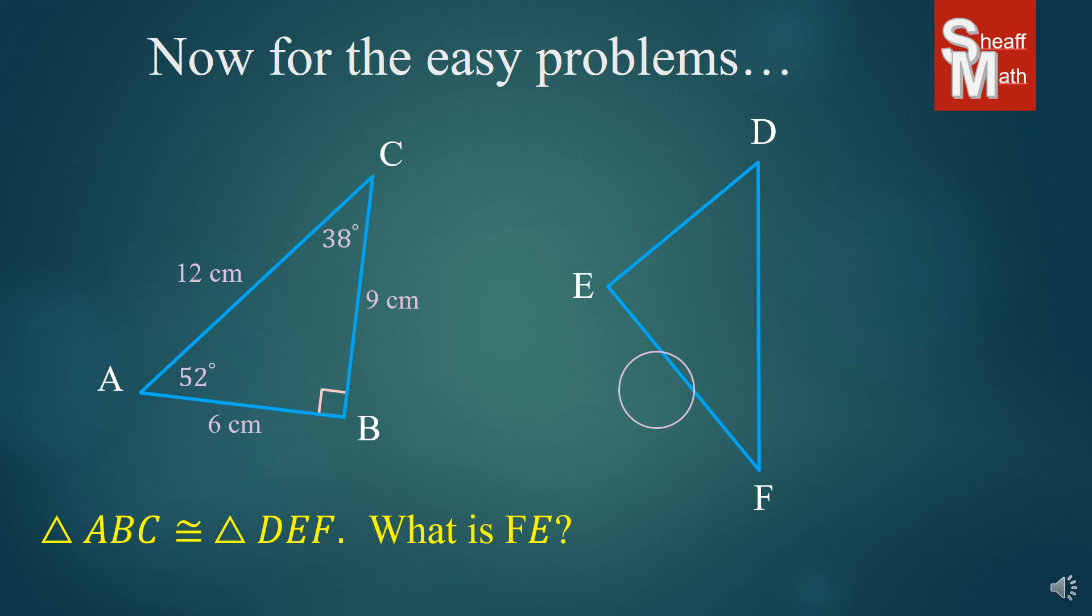And so, let's look where it is in the congruency statement. FE is right there, and it corresponds to CB. And looking up at our triangle, CB is 9 centimeters, therefore, FE is 9 centimeters as well. And so, you don't have to even look at the triangles to try to figure it out and risk making a mistake just by using your eyes. You can actually use that congruency statement to help you find them.